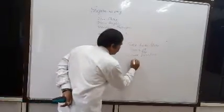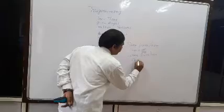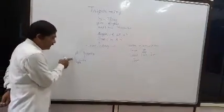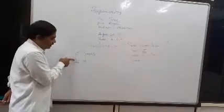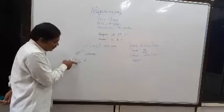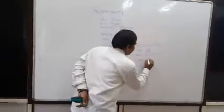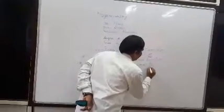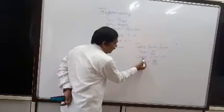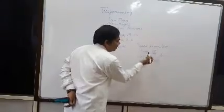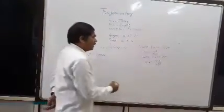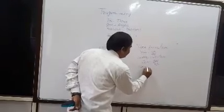The second function is the cosine function, denoted by cos theta. Cos theta is defined as the ratio of adjacent side divided by hypotenuse. Simply, cos θ = adjacent / hypotenuse.